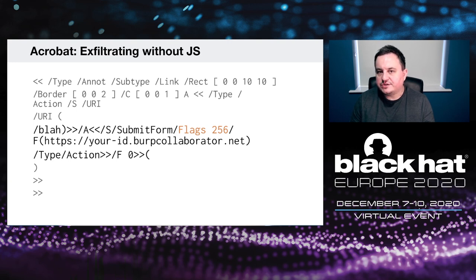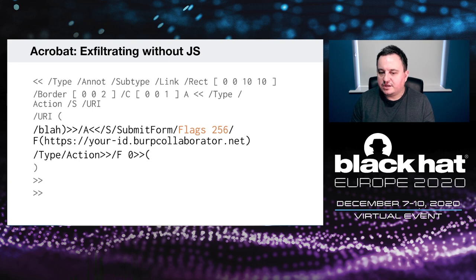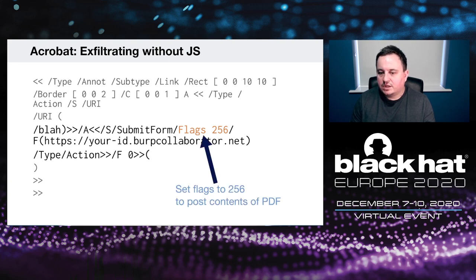You can also do this without JavaScript, which is important when a client doesn't support JavaScript but allows the submit form action. Here I inject a new annotation, specify the submit form action, give it an external Collaborator URL, and use the flags dictionary key. If you specify 256, the entire contents of the PDF will be submitted to that external location — really handy for blind PDF injection.